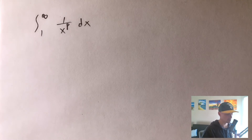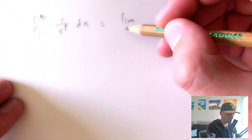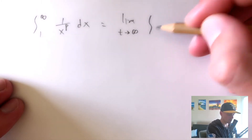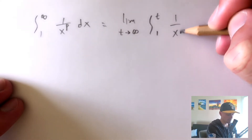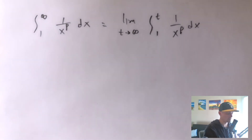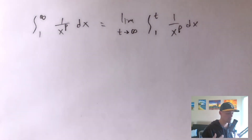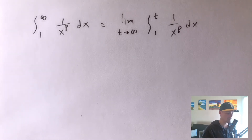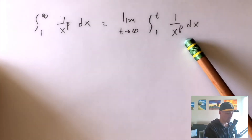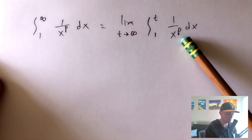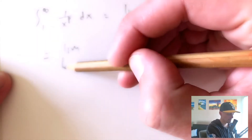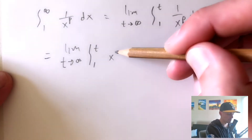What we can do instead is take the limit as t goes to infinity of the integral from 1 to t of 1 over x to the p dx. We're not dealing with infinity in the bounds until later — we can evaluate this integral, plug in bounds 1 and t, which actually makes sense to plug in, and then figure out what happens as t gets infinitely large. Another way to think of 1 over x to the p is by rewriting it as x to the negative p dx.